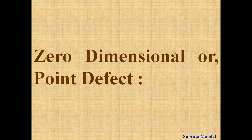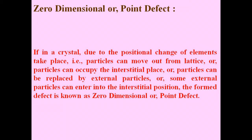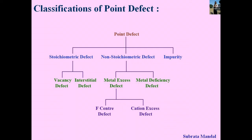Zero-dimensional or point defect is the most important defect. If in a crystal, due to positional change of elements, particles can move out from the lattice, or particles can occupy interstitial places, or particles can be replaced by external particles, or some external particles can enter interstitial positions, the formed defect is known as zero-dimensional or point defect. There are mainly three types of point defects: A. Stoichiometric defects, B. Non-stoichiometric defects, and C. Impurity defects.